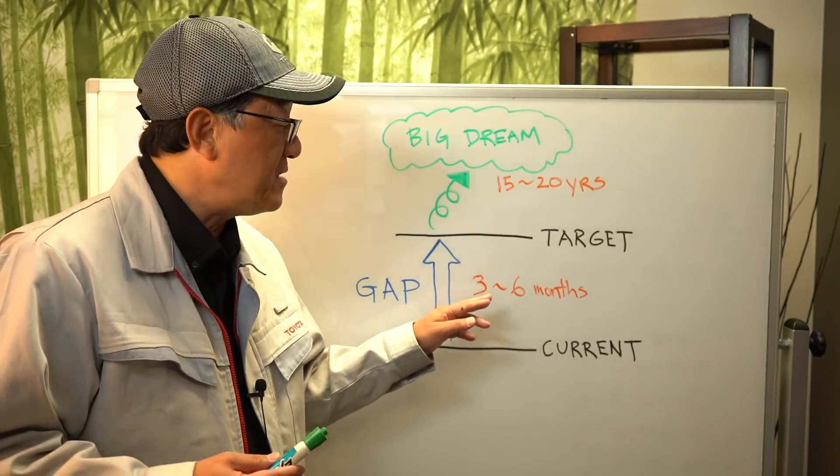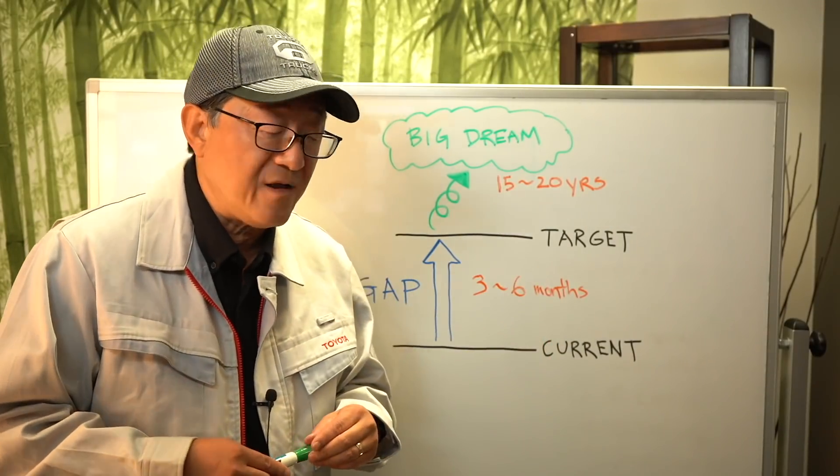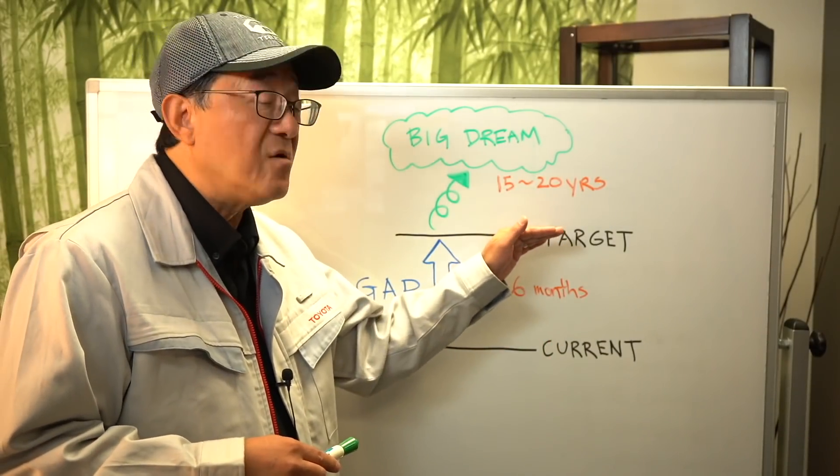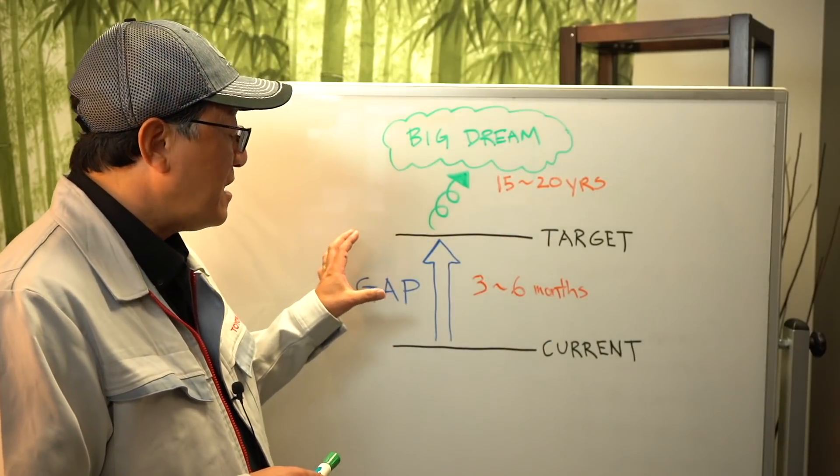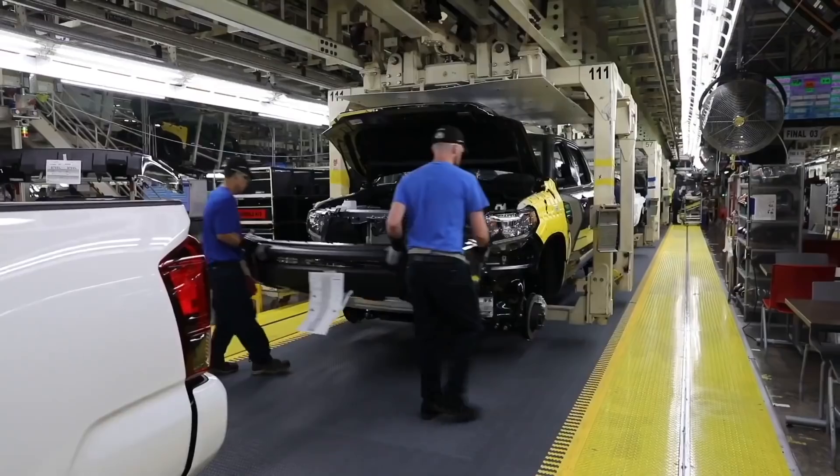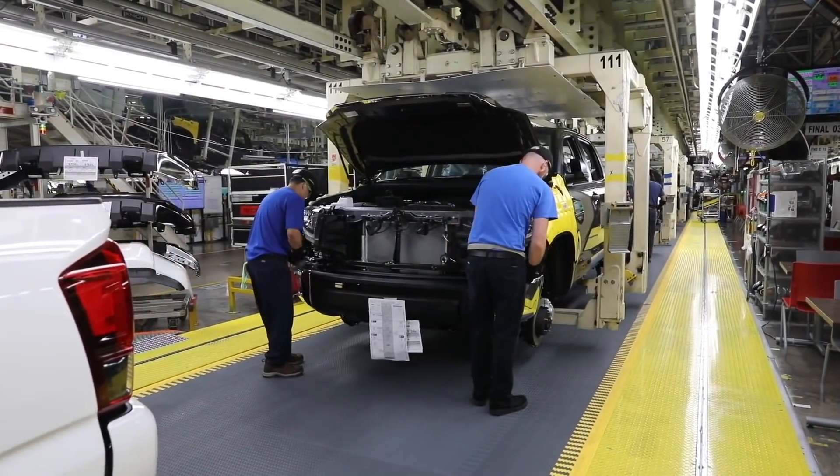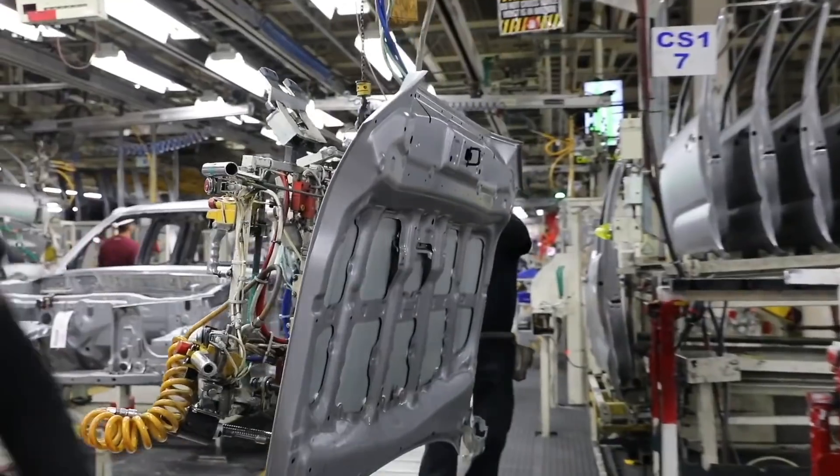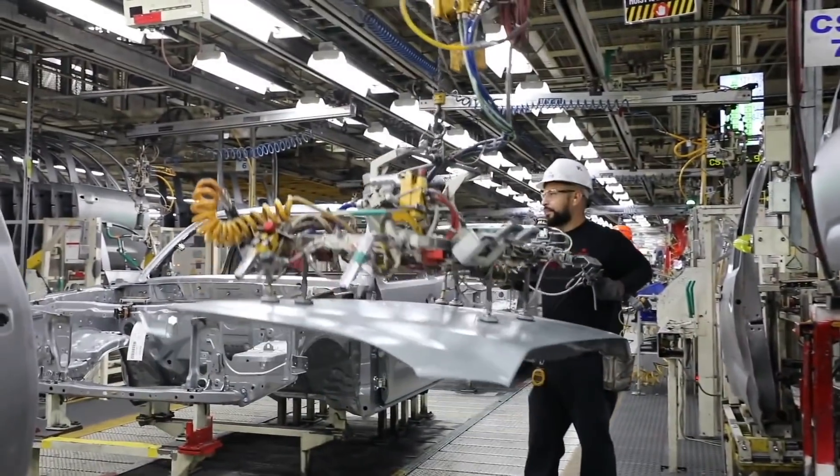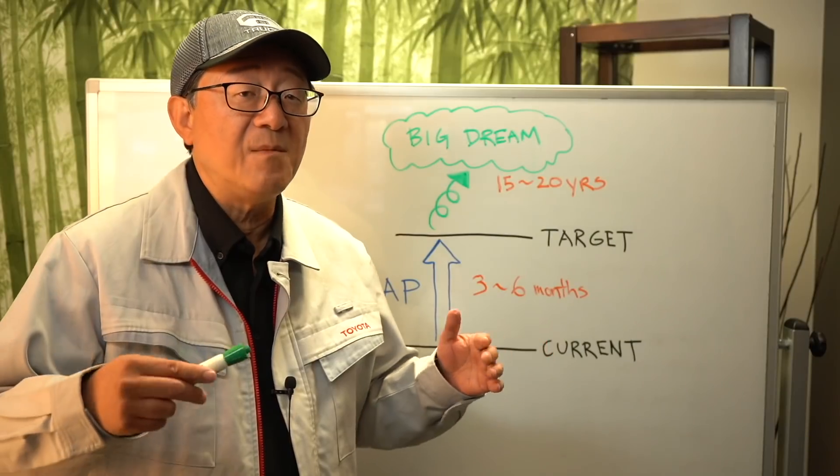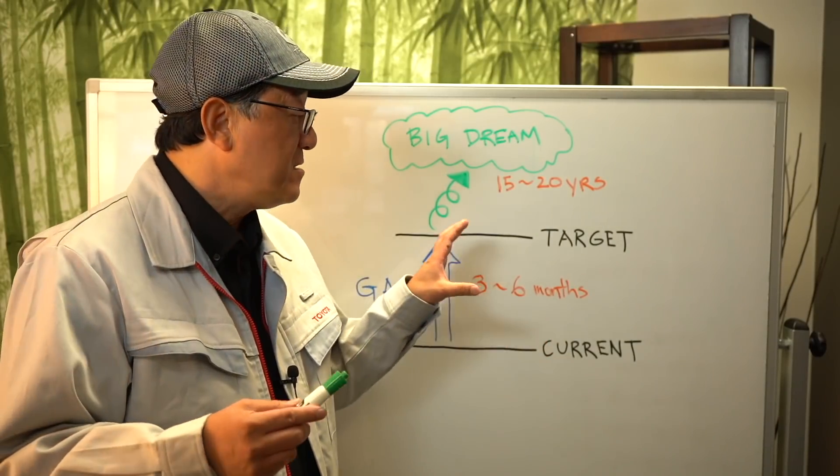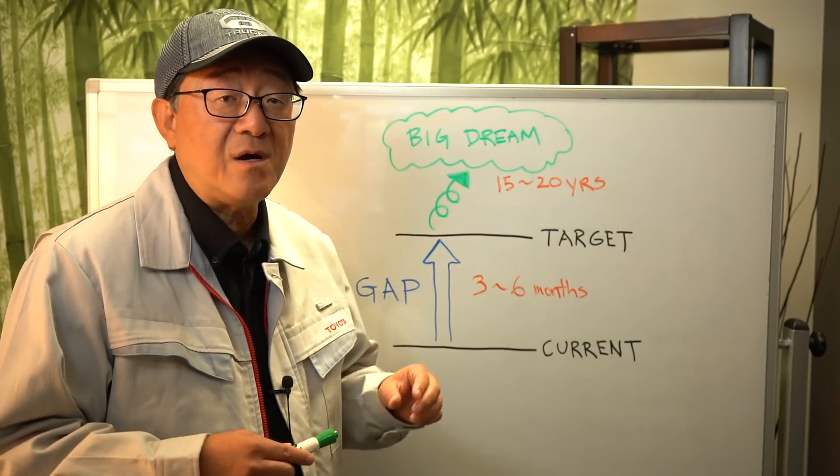Typically this gap, by the way, is sort of three to six month time frame. So exactly where do you want to go in three to six months time and where you are today, and then you can now figure out exactly what the gap is. So up to this point, most car companies know how to do this problem solving technique, but this is where the difference starts. Toyota goes way beyond that. They go above and beyond the short term three to six month problem solving technique.